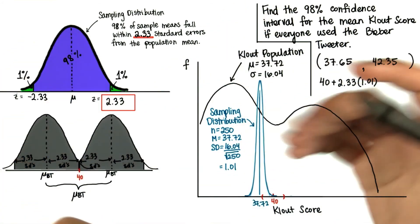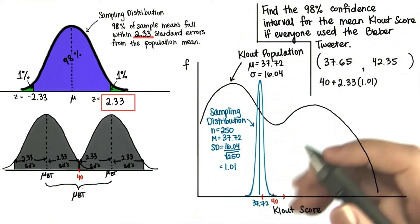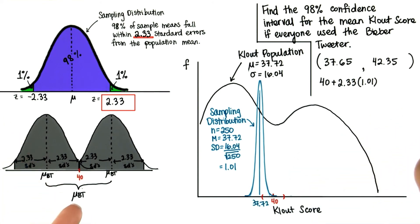But now we're being a little more lenient. We're allowing this sample mean to be a little bit further from the population mean. And so now we have a slightly bigger interval. But now we're more sure that the true population mean will be in this interval.